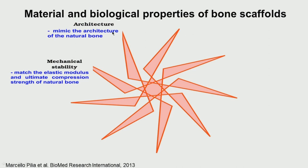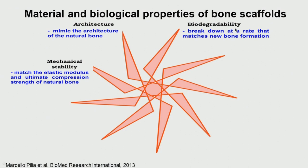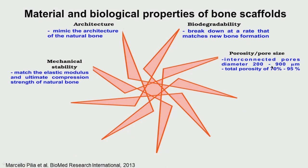The biomaterial must also mimic the architecture of natural bone — including porosities, shape, and size. Biodegradability is important: ideally the biomaterial disappears once bone has formed, matching exactly the rate at which bone is growing — this is called biodegradability matching. Porosity should be around 70 to 95 percent, with pore diameters of 200 to 900 microns, all interconnected so tissues can grow properly.